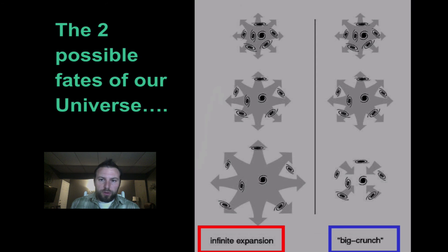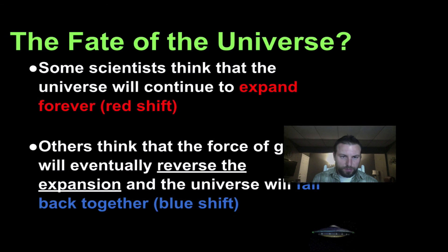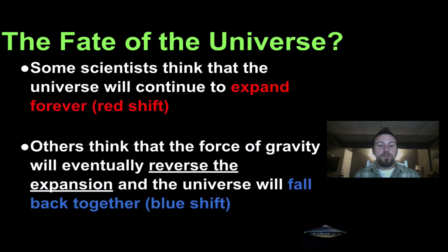There are two possible fates for our universe. Some people believe it's just going to keep expanding outwards forever. Others believe it's going to expand out to a point and then start falling back into itself. One scenario gives us that expansion with red shift going on forever; the other suggests that the force of gravity will eventually reverse that expansion, pulling everything back and producing a blue shift.